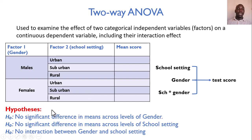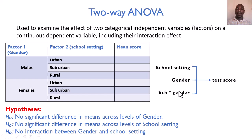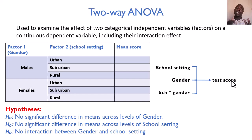This gives rise to three hypotheses tested under two-way ANOVA: first, there is no significant difference in means across levels of gender; second, there is no significant difference in means across levels of school setting; and third, there is no interaction effect between gender and school setting on test scores. So in two-way ANOVA you have two independent categorical variables versus one numerical outcome, and you additionally assess whether those two variables interact to affect the test scores.